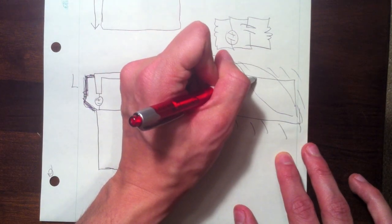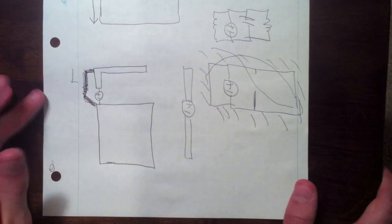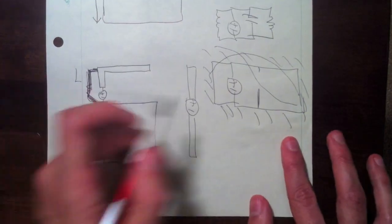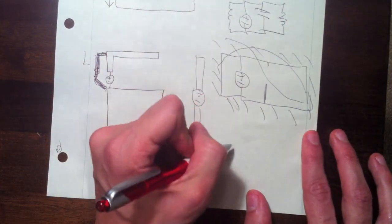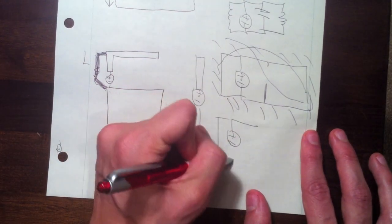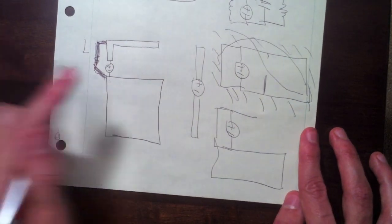The impedance at this point in the center of the slot is actually infinite, which means no current flows but there's a voltage. Instead of making a whole slot, we actually cut it in the center. We still have this exact same radiation structure.